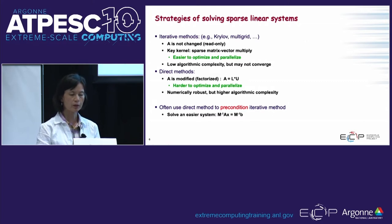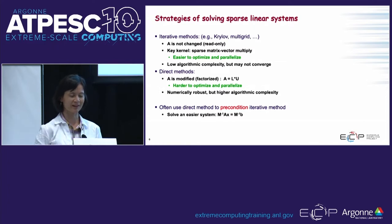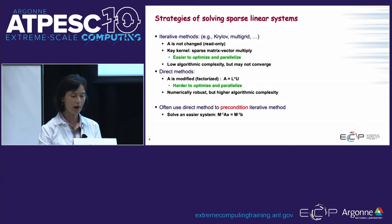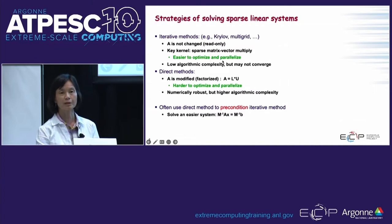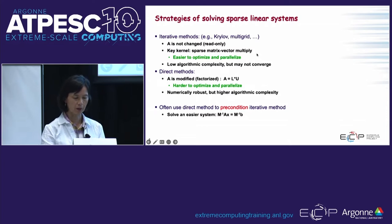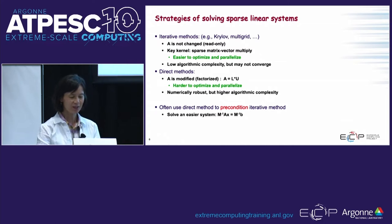For solving sparse linear systems there are two big classes of algorithms: iterative methods, and direct methods based on Gaussian elimination. Each has pros and cons — you cannot say which is the holy grail, it's all problem dependent. For iterative Krylov-based solvers, it's mostly SpMV-based so relatively easy to optimize and parallelize. For direct solvers, the difficulty is that matrix A is modified into LU, so it's not as clean.